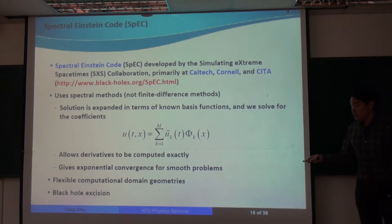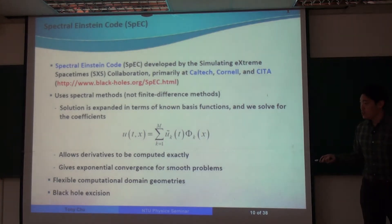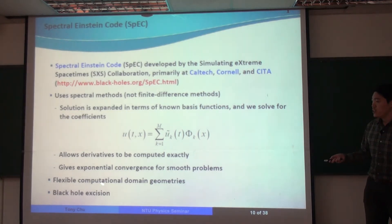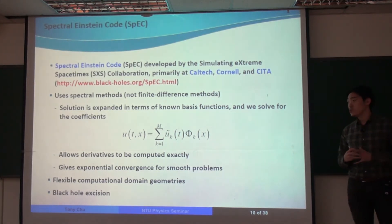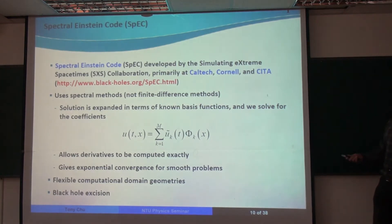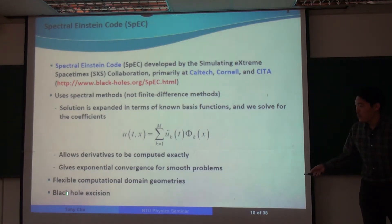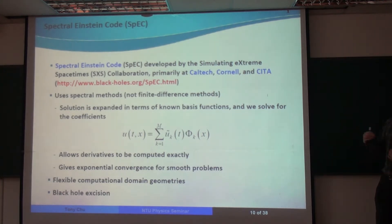And in addition, our spectral Einstein code allows use of flexible computational domain geometries that can adapt to the physical problem we're dealing with. And it also involves a technique called black hole excision. But to explain this, it's probably easier to do with a picture.